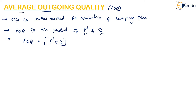A curve drawn from AOQ and 100P' is called the AOQ curve. A curve has to be drawn for the AOQ — that is, Average Outgoing Quality — and this curve is drawn from AOQ and 100P', which is called the Average Outgoing Quality curve.